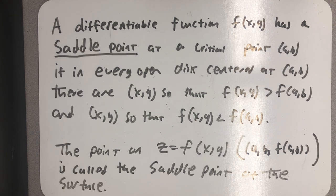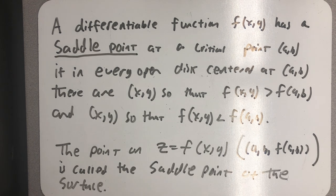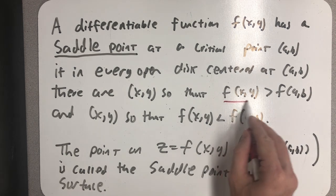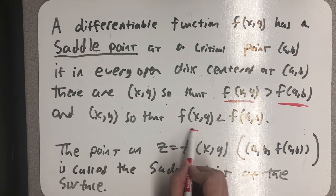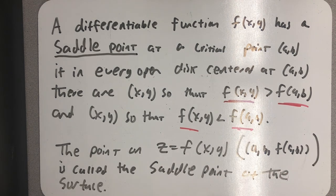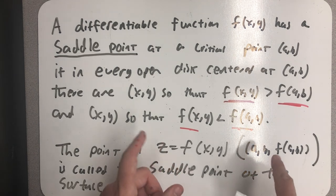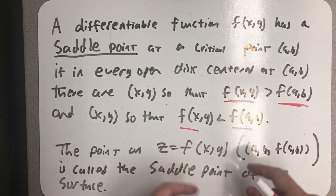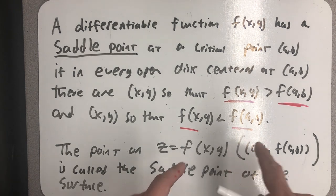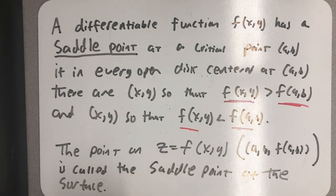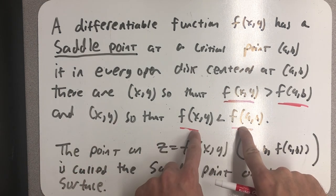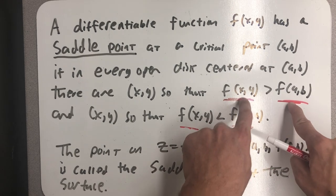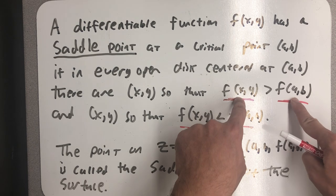If in every open disk centered at (a, b), there are x, y's, there are points so that f(x, y) is larger than f(a, b), and there are points so that f(x, y) is smaller than (a, b). What this is really saying is that if I'm at a saddle point, there are paths that go through that point where some of the paths make it look like a local min and other paths make it look like a local max. If I'm going with points that behave like this, it's making this point look like a max. If I have points that behave like this, it's making this point look like a min.